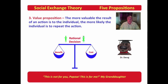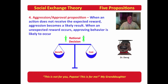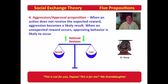The fourth proposition is aggression and approval. When an action doesn't receive the expected reward, aggression becomes a likely result — in plain terms, they're going to get mad when they don't get what they expect. We see this in both young and old people: they expect a certain reward for a behavior based on what they've encountered in the past, and when that doesn't happen, they can become aggressive. The opposite is also true: when an unexpected reward occurs, something good you didn't expect, then approving behavior is likely to occur.